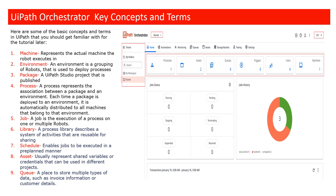What is a package? A package is nothing but a UiPath Studio project that is published. When you create an automation in UiPath Studio, it will be bundled as a NuGet package — that's the result, and it is called a package. It contains the workflows you defined along with .NET-based libraries so it can run in an execution environment.